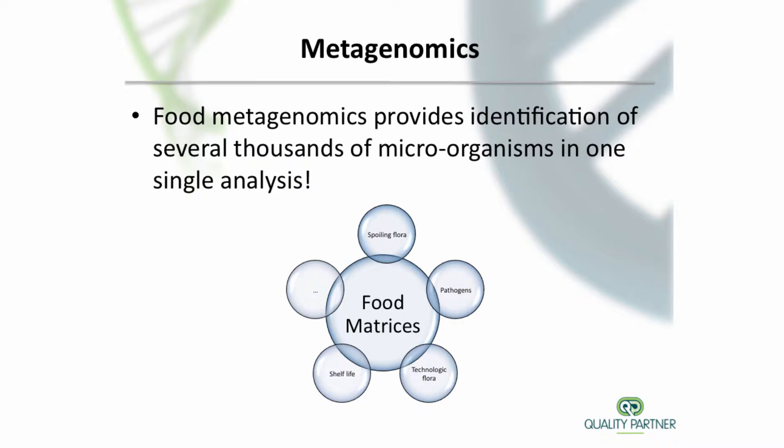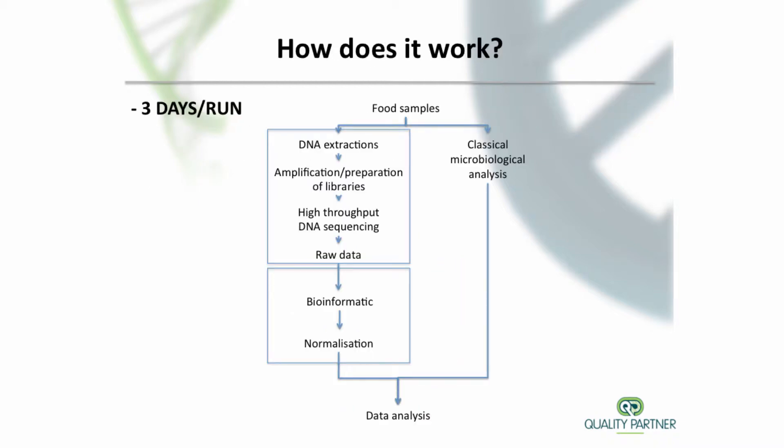Metagenomics is now also available for food microbiology. A specific region of genes is amplified by PCR using a homemade primer.